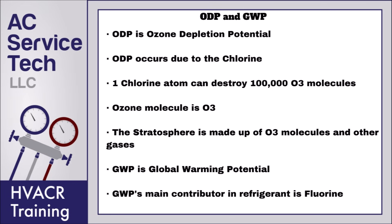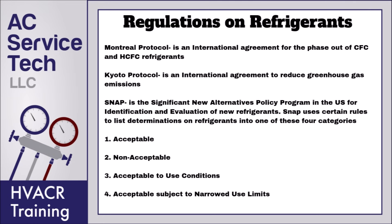Some of the older refrigerants had ODP and GWP. ODP is ozone depletion potential and GWP is global warming potential. Ozone depletion potential occurs due to the chlorine in the refrigerant being released into the atmosphere. One chlorine atom can destroy 100,000 O3 molecules. The ozone molecule is made up of O3 and the stratosphere is made up of O3 molecules and other gases. GWP's main contributor in the refrigerant is the fluorine. Because of that, the Montreal Protocol was an international agreement for the phase out of CFC and HCFC refrigerants, which both led to ozone depletion potential as well as global warming potential. The Kyoto Protocol was an international agreement to reduce greenhouse gases, which included refrigerants with GWP.